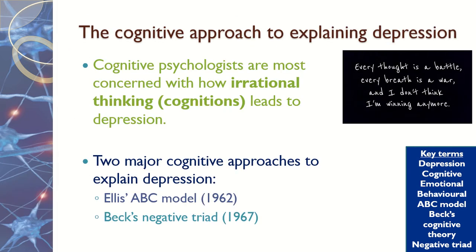So we're going to be looking at two models: Ellis' ABC model and Beck's negative triad. But first of all, you need to be clear that cognitive psychologists are most concerned with how irrational thinking leads to depression. We're very much talking about irrational thinking and our thoughts, so make sure you keep that in mind as we go through the PowerPoint.